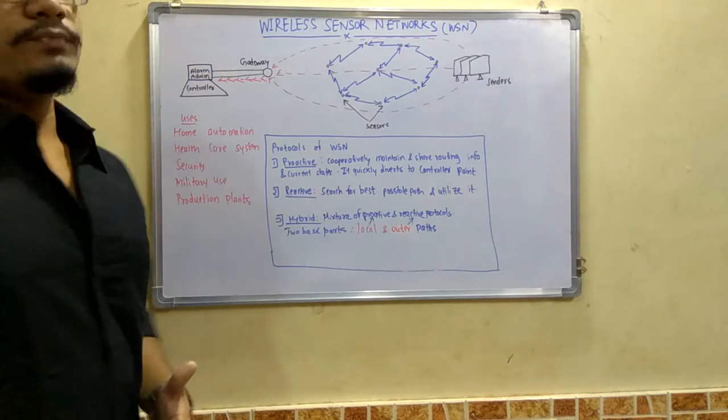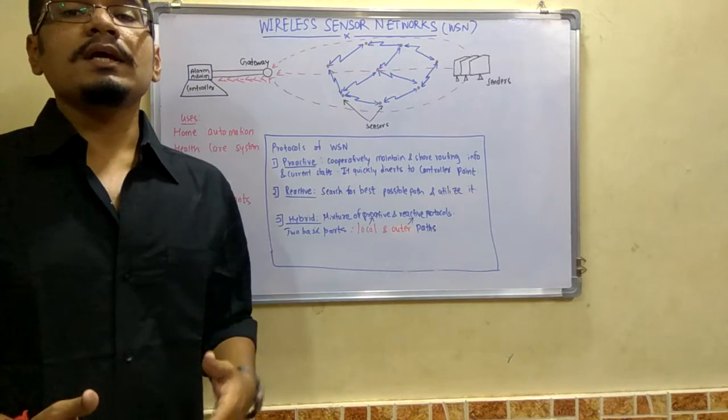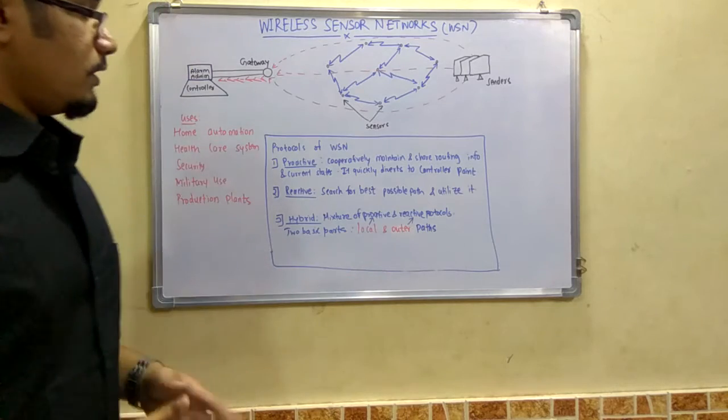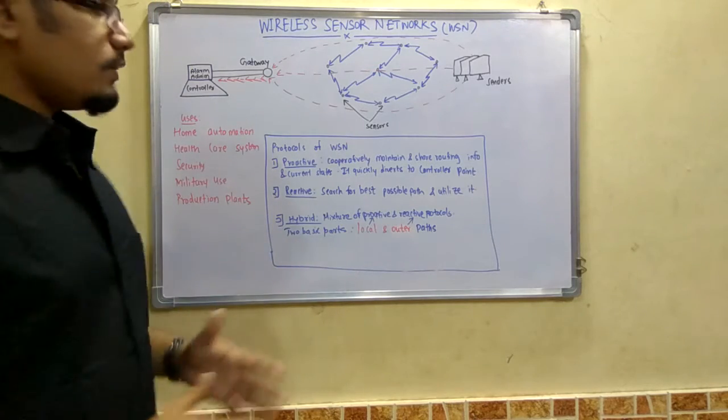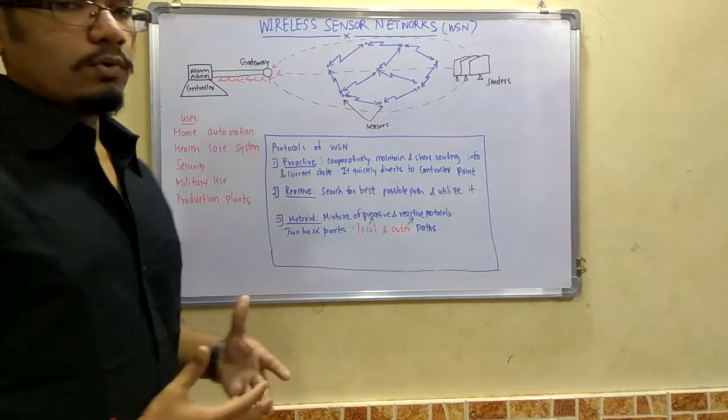Next is the protocols of WSN. WSN works by means of three major protocols: the proactive protocol, reactive protocol, and hybrid protocol. The proactive protocol cooperatively maintains and shares routing info of the current states.